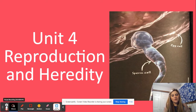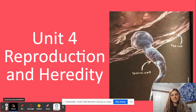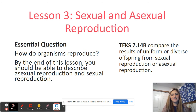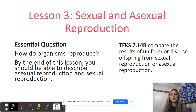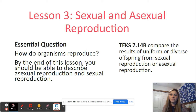So again, we're in Unit 4, Reproduction and Heredity. We last left off with Lesson 3, Sexual and Asexual Reproduction. Today's essential question that we're going to answer is: how do organisms reproduce? My goal for you is that by the end of class today you're able to describe asexual and sexual reproduction.